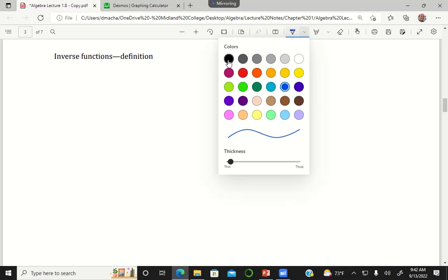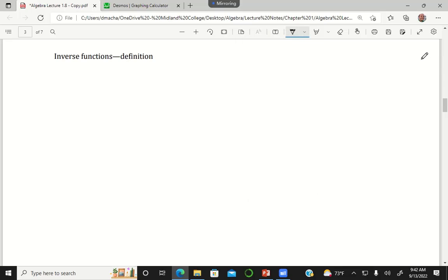Now the definition of an inverse function is just like if you have some value (2, 5) that belongs to your function, so that's an ordered pair.